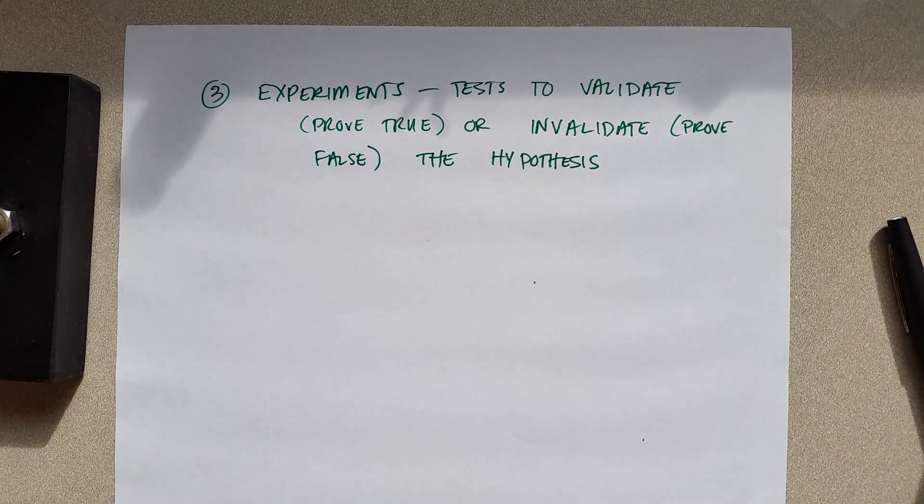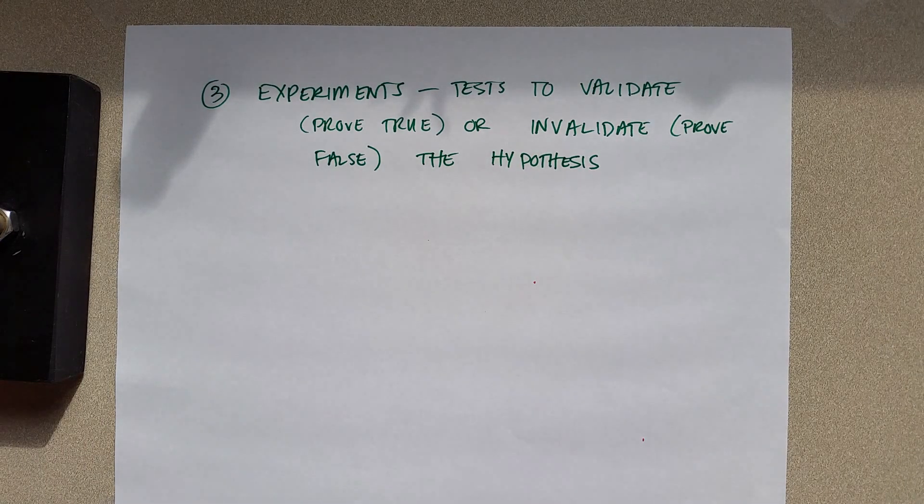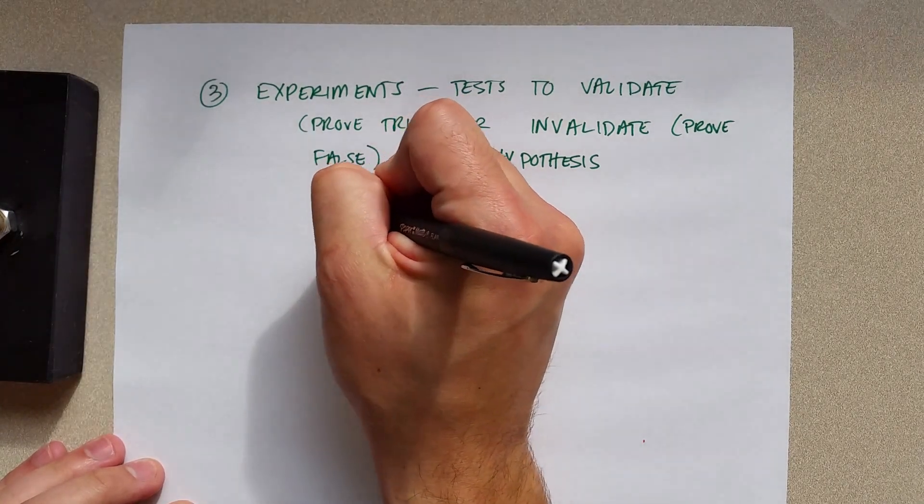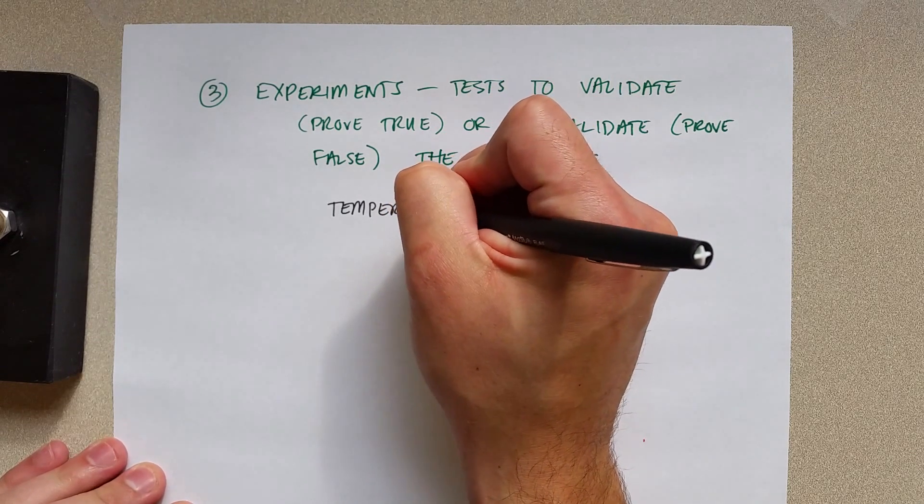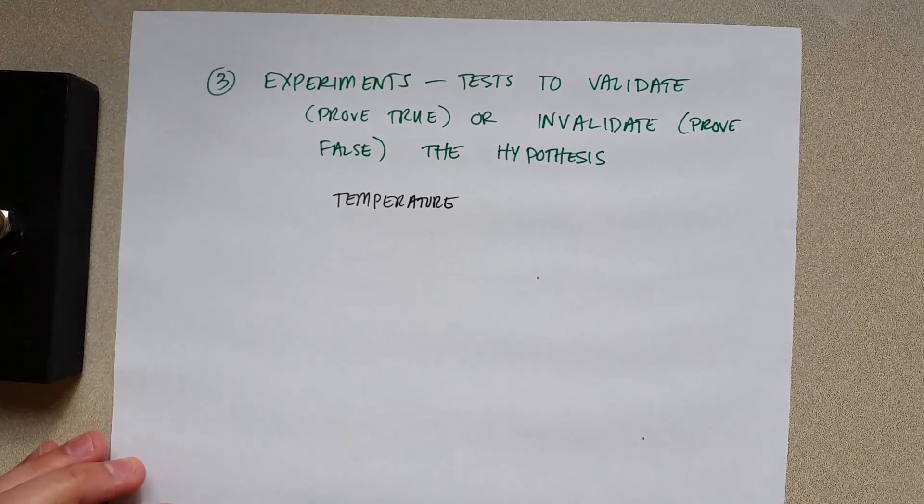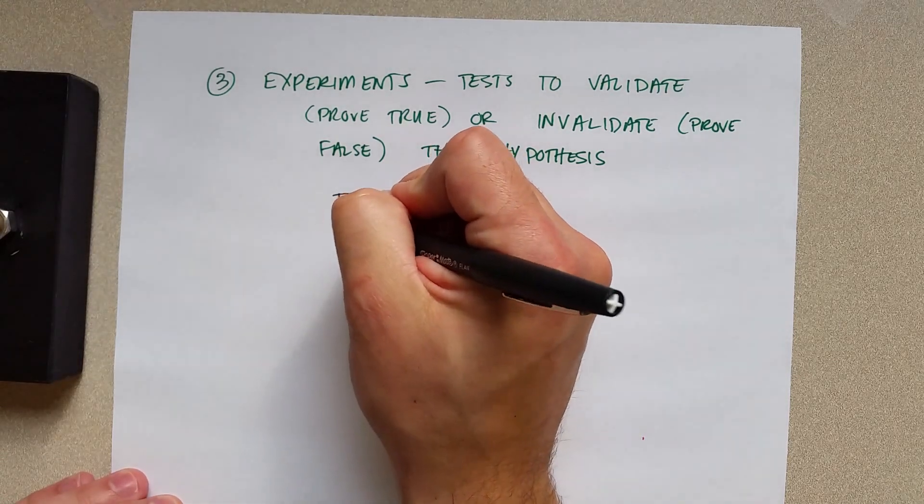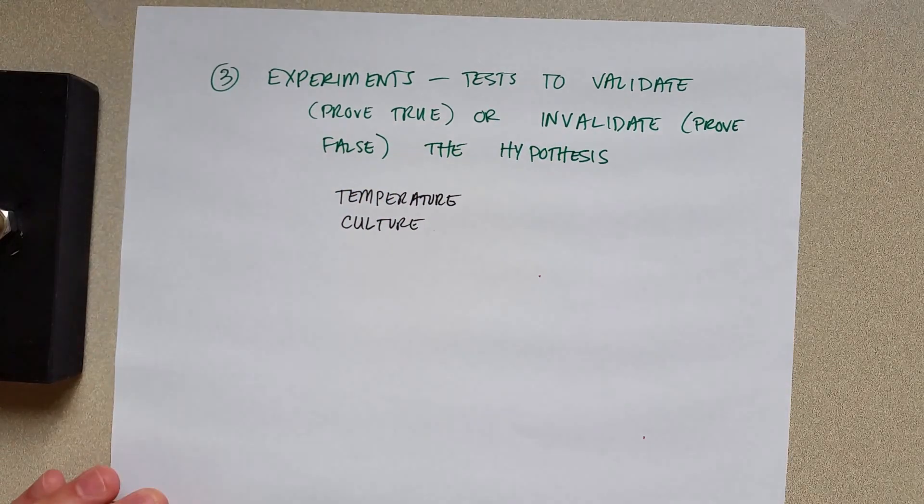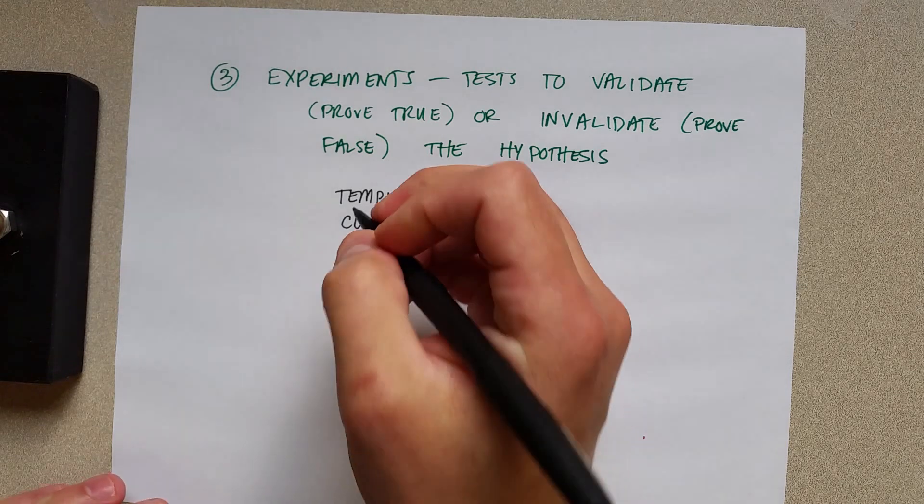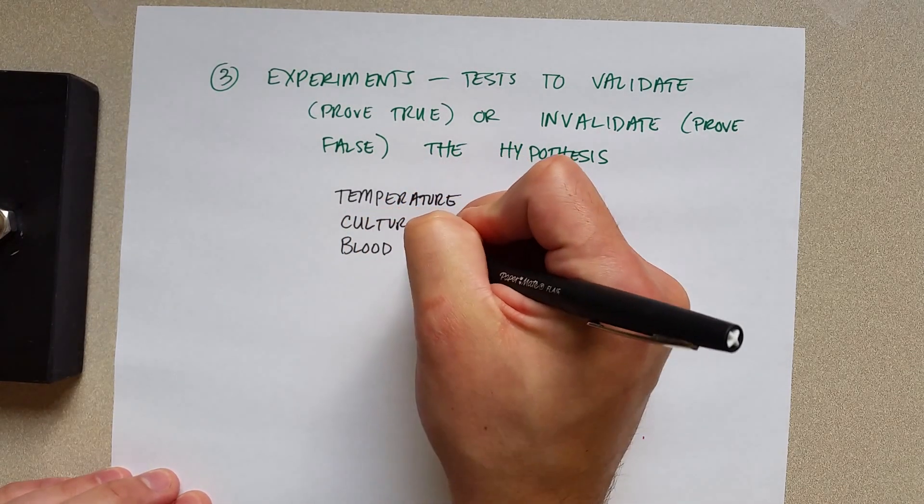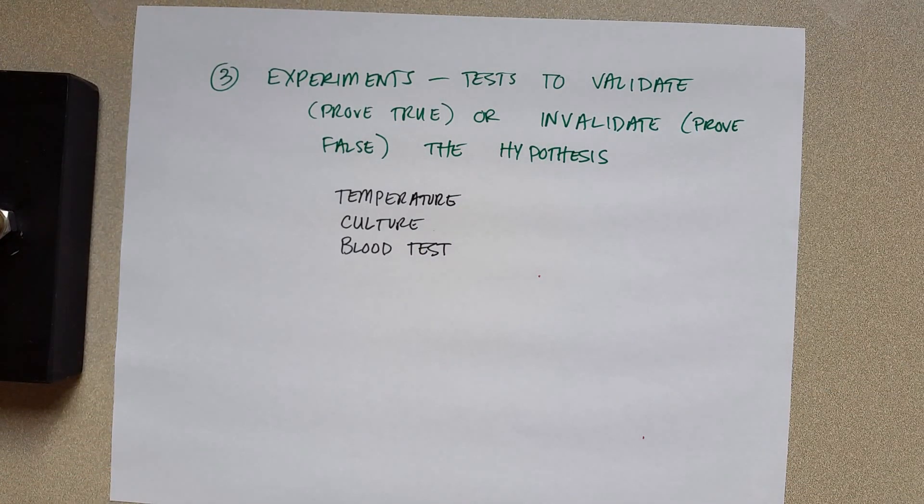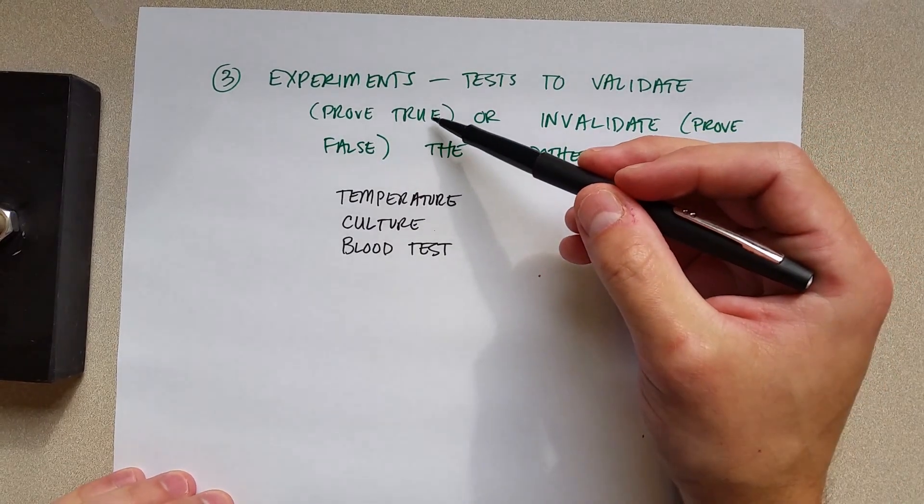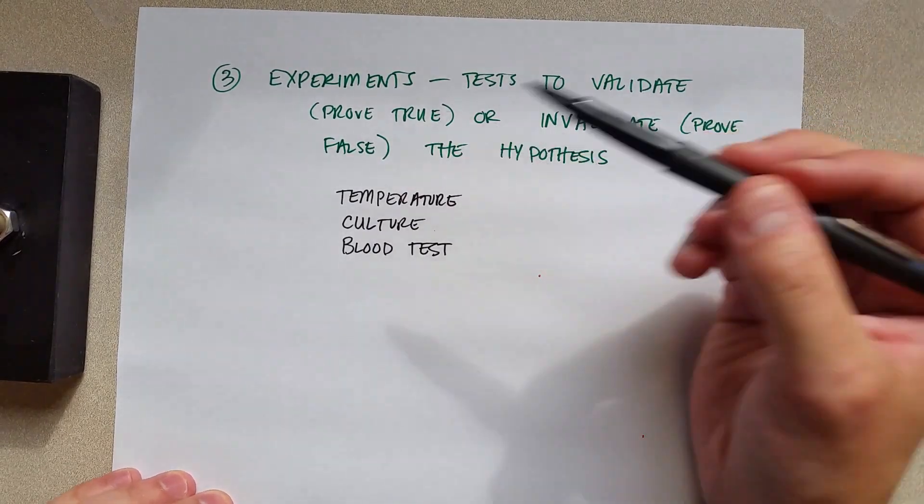Now, in this scenario where I'm sick, there would be a couple of very simple tests to make. She should take my temperature to see if I'm running a fever. If she thought I had strep throat, she might take a culture and see if the bacteria are present. If it's something more serious, she might take a blood test to figure out what's going on. All of these are experiments to try to prove the hypothesis true or invalidate it, or prove it false.